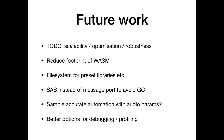In terms of future work, this is all bleeding edge stuff and I really want to test the scalability, optimize it, and try to reduce the memory footprint. I want to investigate different file system options so that I can have libraries of presets. At the moment I'm not using the shared array buffer to communicate messages via the message port, and I'm a bit concerned about the garbage collector causing glitches. We don't have sample-accurate automation for parameters, but because the Web Audio API supports it we probably could. This is also really hard to debug — if you compile with Emscripten and it causes an assertion in the browser, it's really challenging to work out what exactly the problem was.